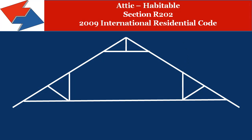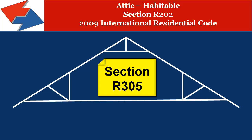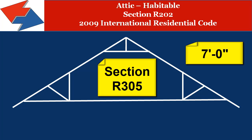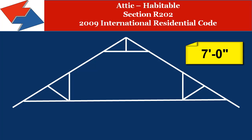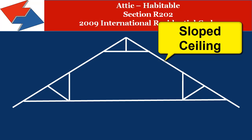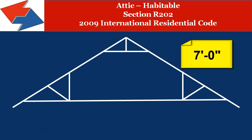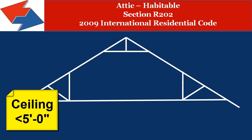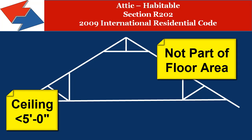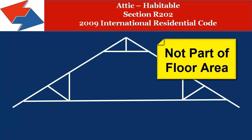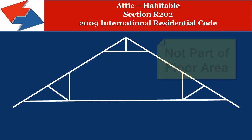Number two, the occupiable floor area must have a ceiling height in accordance with Section R305, which basically states that the minimum ceiling height must be seven feet. Where you have rooms with sloped ceilings such as in an attic, at least 50% of the required floor area, or 35 square feet, must have a ceiling height of at least seven feet. Any room with a ceiling height of less than five feet cannot be considered as part of the required floor area.